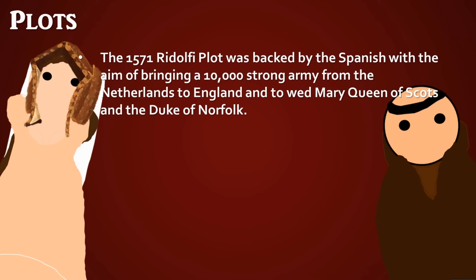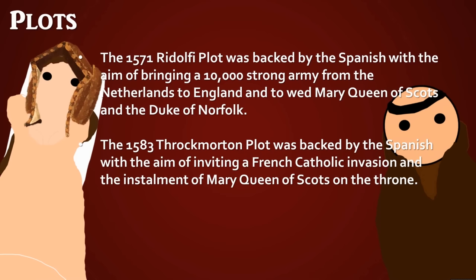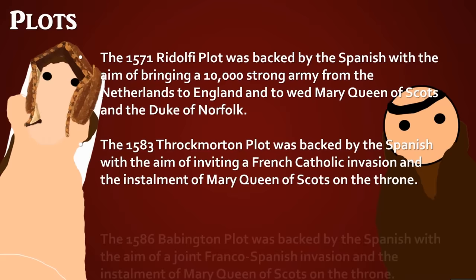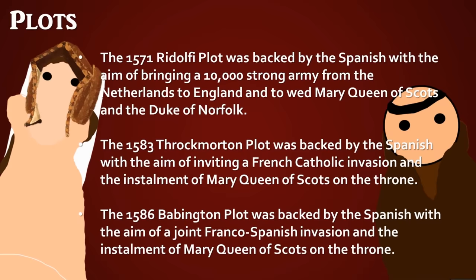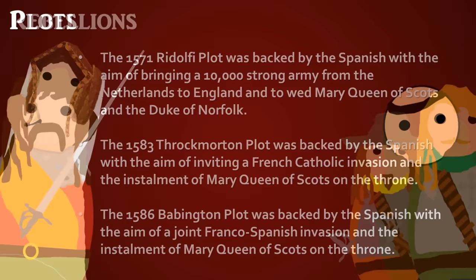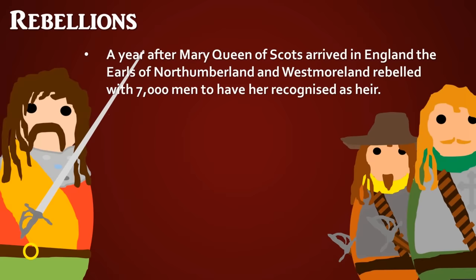Regarding rebellions and plots: In 1571 the Ridolfi Plot, backed by Spain — Ridolfi being an international banker — aimed to bring a 10,000-strong army under the Duke of Alba from the Netherlands, wed Mary Queen of Scots to the Duke of Norfolk, and replace Elizabeth, but it was foiled. In 1583 the Throckmorton Plot, again backed by Spain, aimed at a French Catholic invasion led by the de Guise family to install Mary Queen of Scots, but also failed. In 1586 the Babington Plot planned a joint Franco-Spanish invasion to put Mary on the throne; when this was foiled, they had enough of Mary Queen of Scots and she was executed the following year.